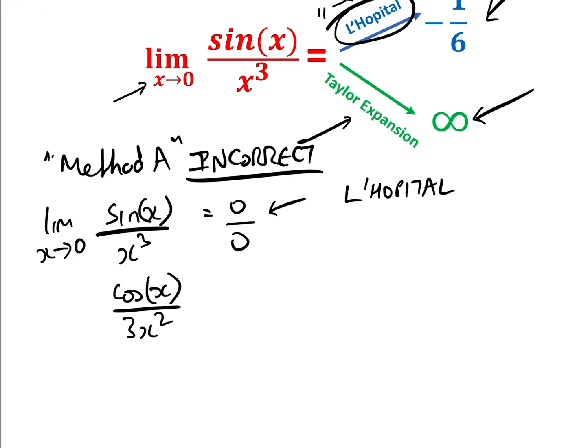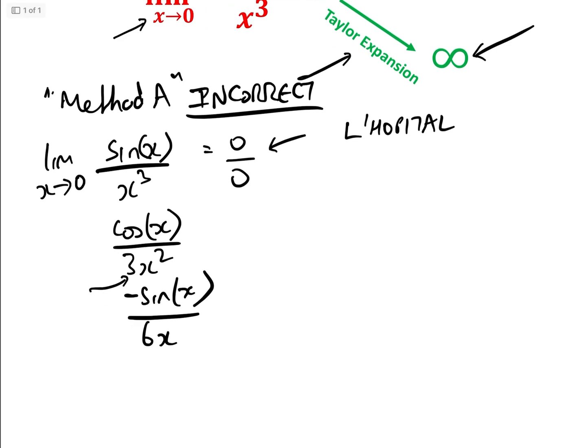Okay, well, if we put 0 in there, we've still not got the right form. So let's differentiate it again. And then we get minus sine x over 6x. And still, we can't do it because we've got x approaching 0. So then we differentiate again, and we've got minus cos x over 6.